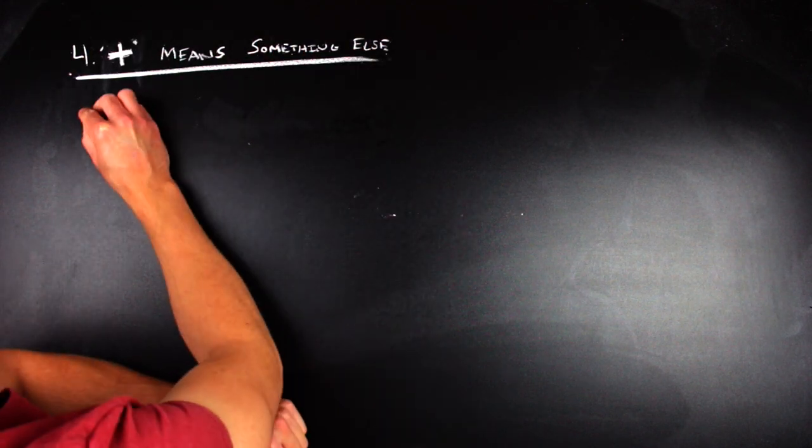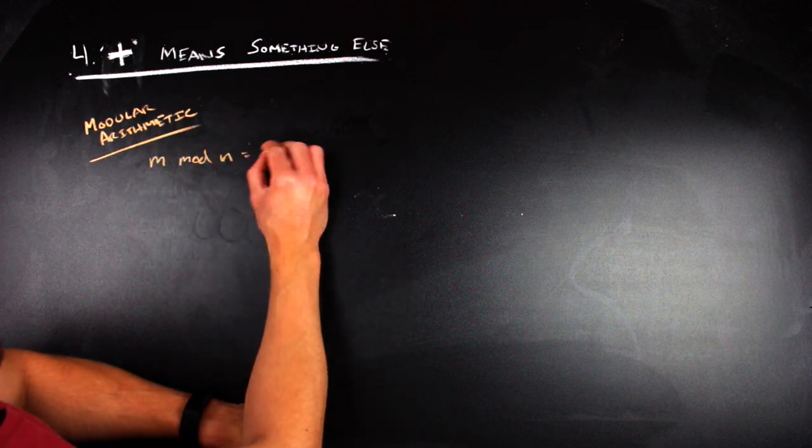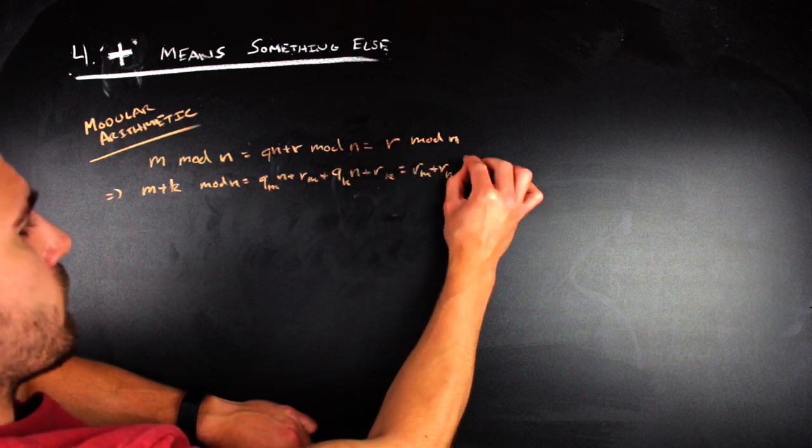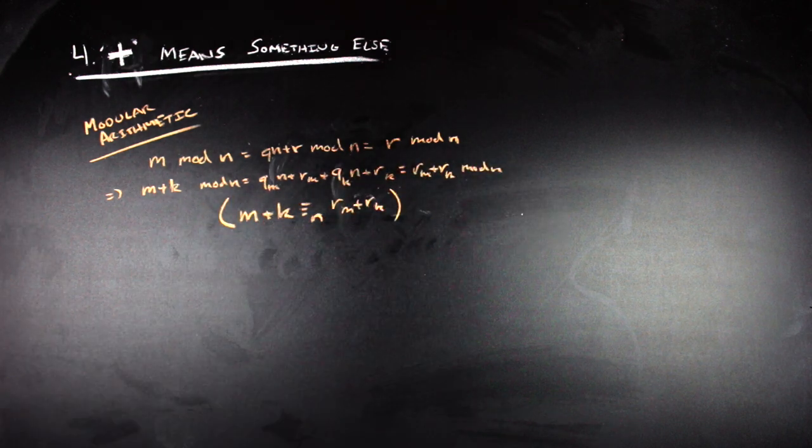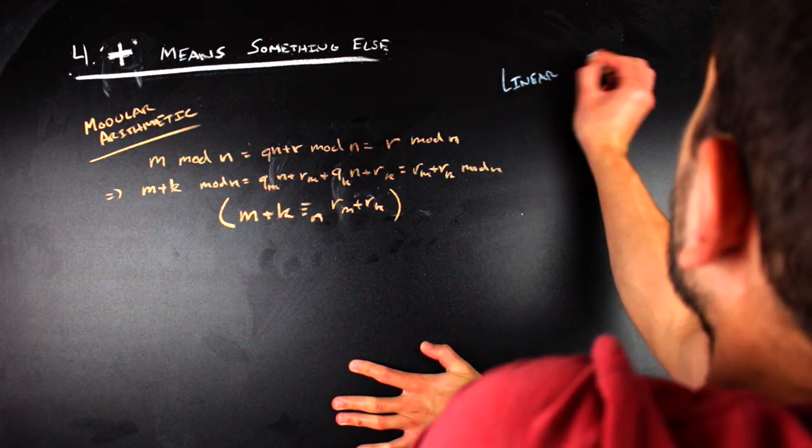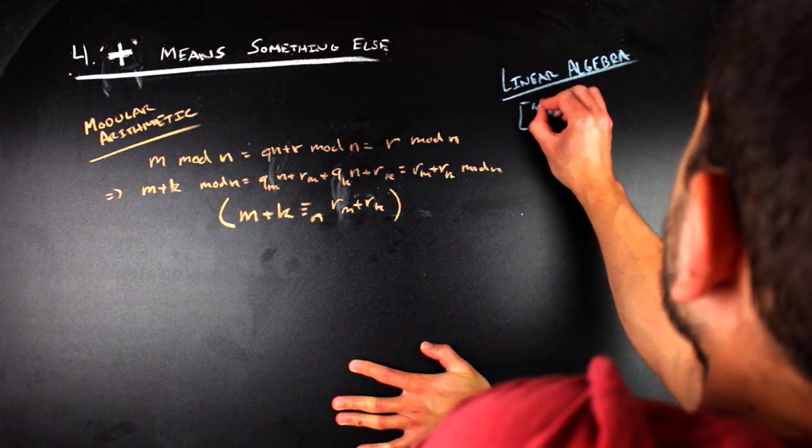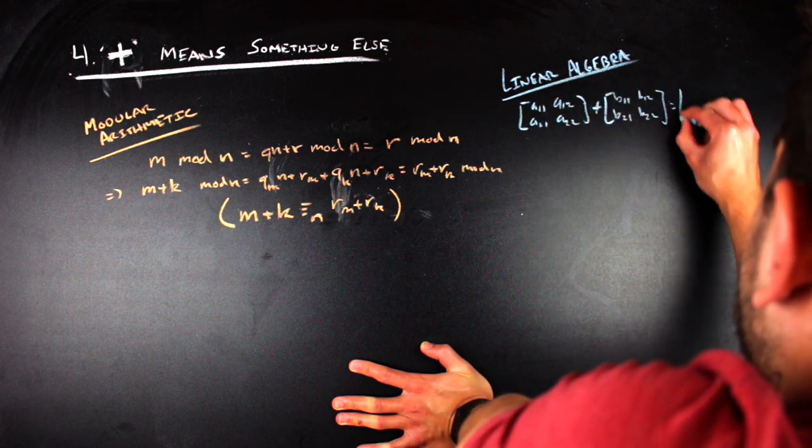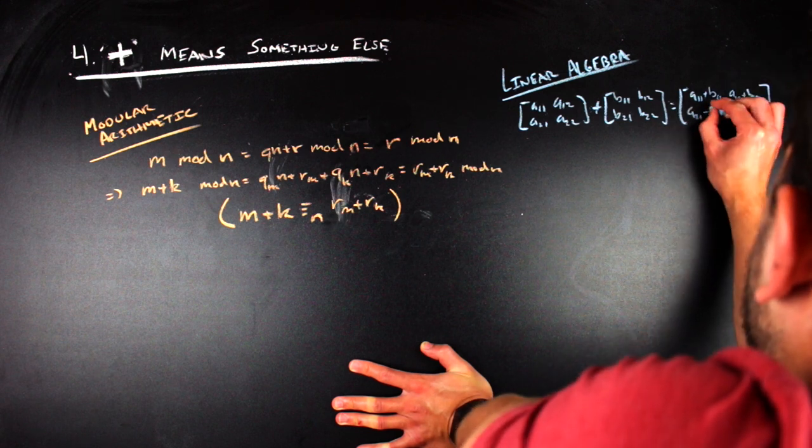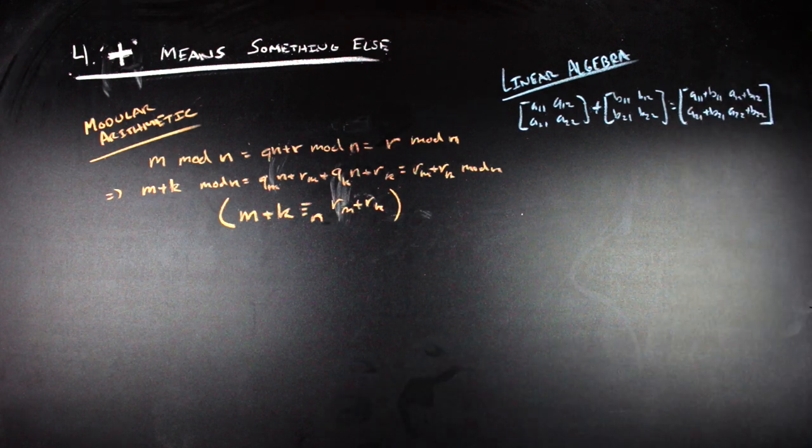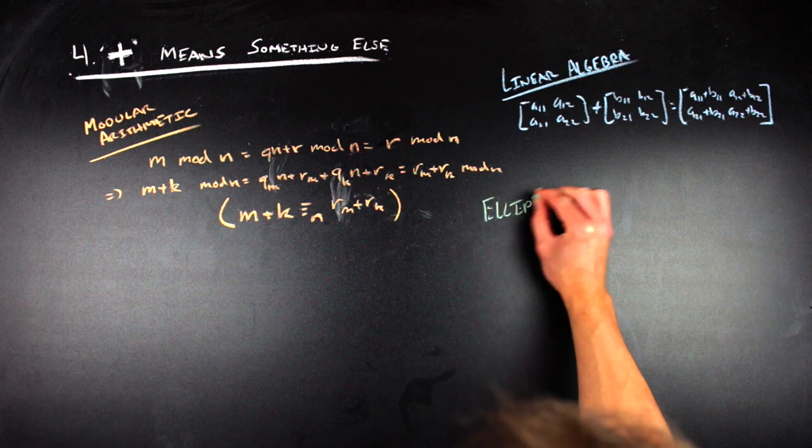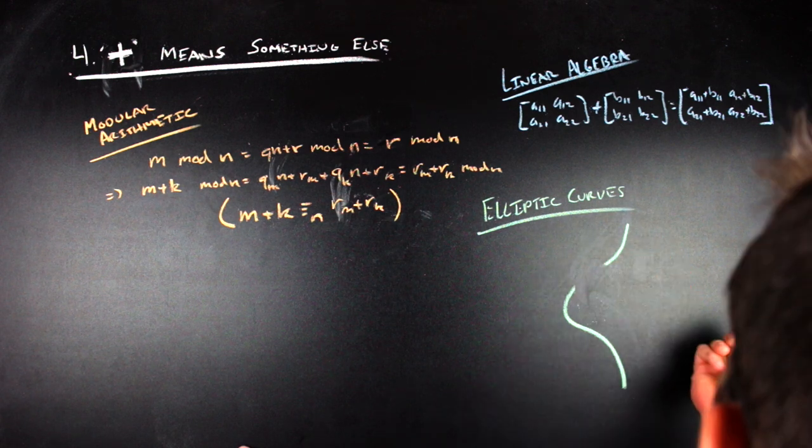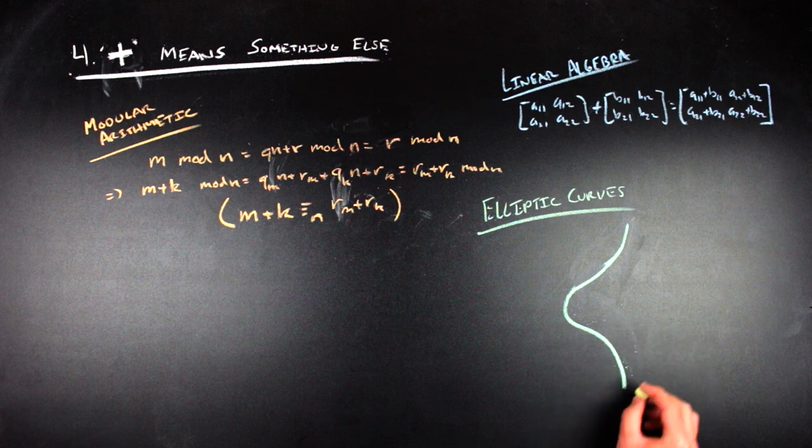So while learning to write proofs, you might first encounter modular arithmetic, which is this very similar form of addition that's reductive and reduces things down to remainders all the time. In linear algebra, you might also encounter matrices, which also have a form of addition to them that's very similar to the addition that you're used to. You just do the addition that you're used to entry-wise. You can even combine the two and do modular arithmetic on matrices as well. Both yield different meanings for what plus means. And depending on what kind of mathematical structures you are studying, you learn that there are several different ways that the plus sign can be interpreted.